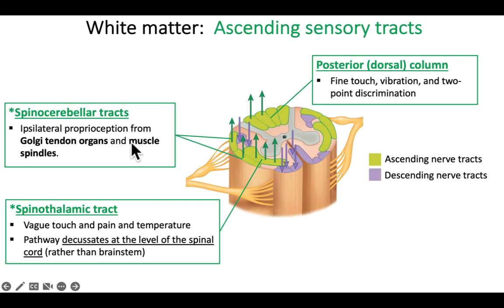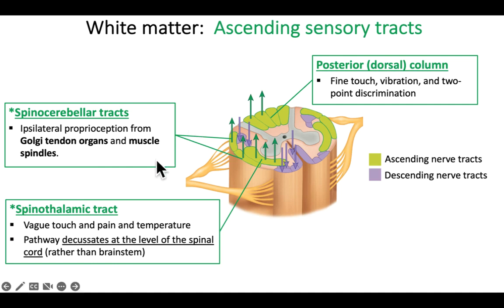Proprioception refers to your body movements — muscle movements and joint movements. We're constantly signaling the cerebellum about the position of our muscles and joints, and the cerebellum uses that information to maintain balance. One example of these proprioceptors is the Golgi tendon organs, which monitor the tendons of our muscles. The muscles also have muscle spindles, which monitor the length of the muscle. So now your cerebellum knows what's going on with the muscles and tendons.